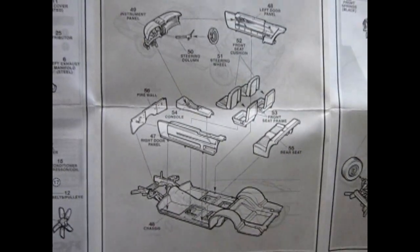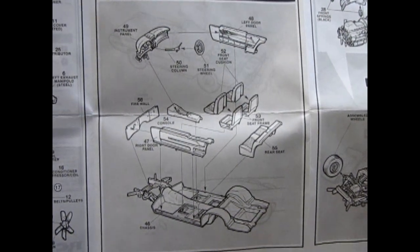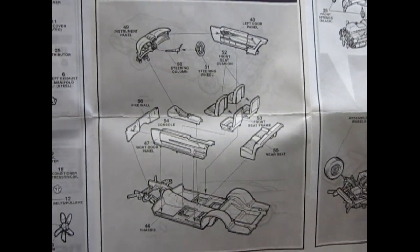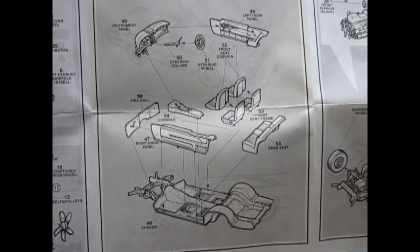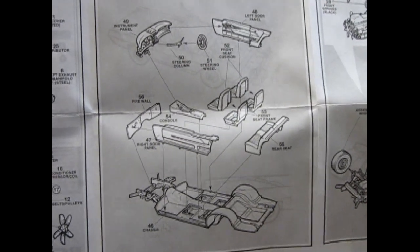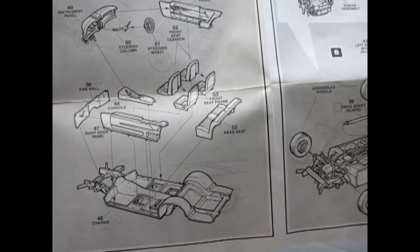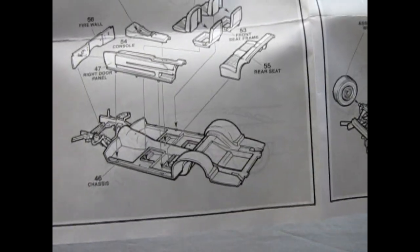And look at that interior right there. Look at all the components involved in that. The instrument panel, steering column, steering wheel, front and left and right door panels. This is not a tub like earlier 60s kits. The center console, the firewall, the seat fronts and backs, and the rear seat all pop onto that wonderful chassis.